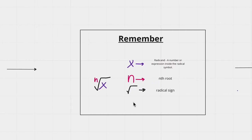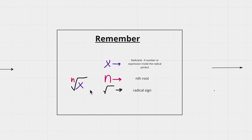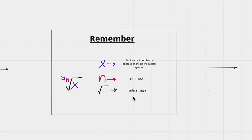Let's look deeper into what the terms mean. The x that is inside the radical sign is called the radicand, and it's a number or expression. The n value that is outside the radical sign is called the nth root, and it can be any number — 2, 3, 4, 5, really anything. And this sign here is just called the radical sign.